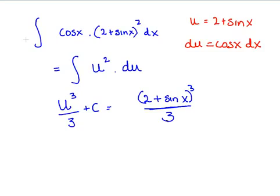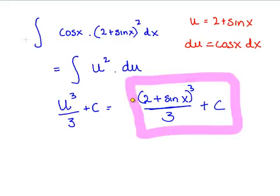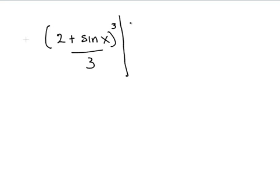Now we are going to put in our limits and evaluate the definite integral. We have this term here, and that is the answer to the indefinite integral, but we are going to evaluate the definite integral. So (2 plus sin(x)) cubed all over 3, and the limits are π/2 and 0. Let's evaluate that out.